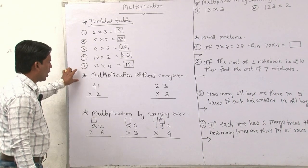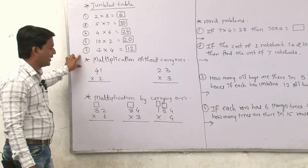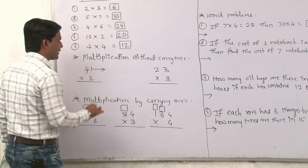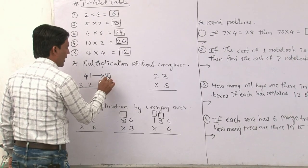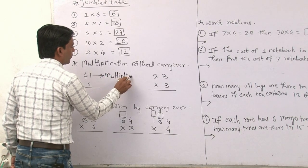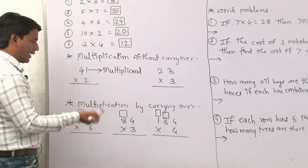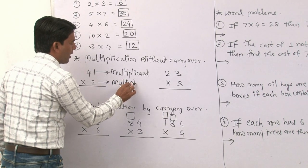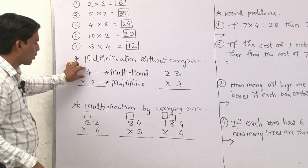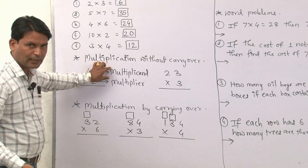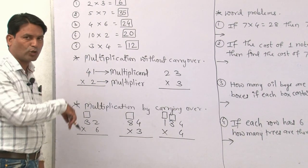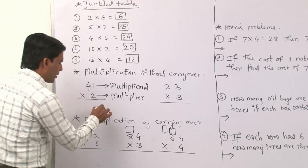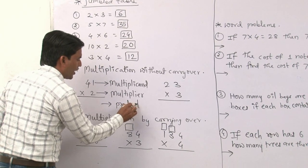After that we will learn multiplication without carry over. In a multiplication sum, the number which we multiply is known as the multiplicand. The number by which we multiply is known as the multiplier. And the answer of both is known as the product.